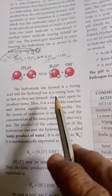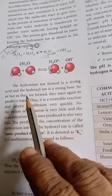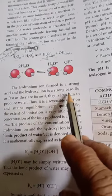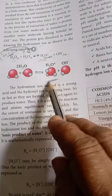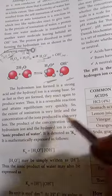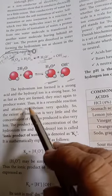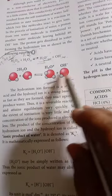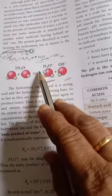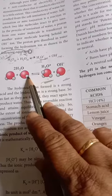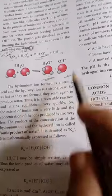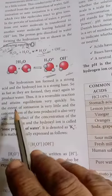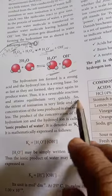This hydronium ion formed is a strong acid and the hydroxyl ion is a strong base. As fast as they are formed, they react again to produce water. It is a reversible reaction - forward and backward reactions take place simultaneously. Thus it attains equilibrium very quickly.